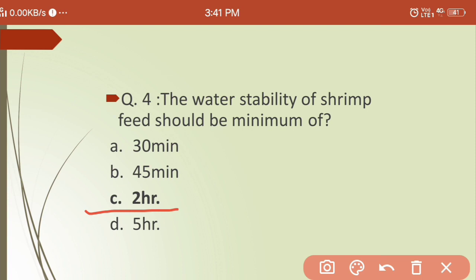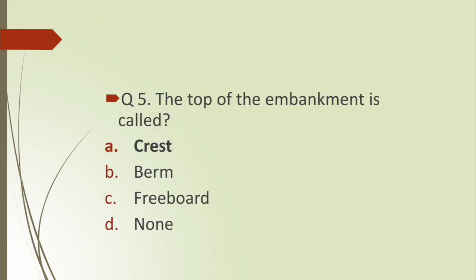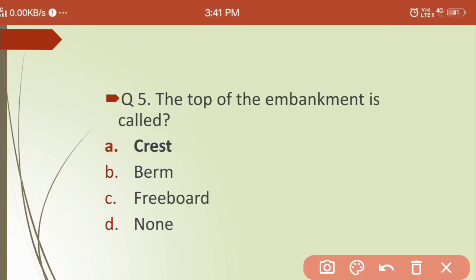Fifth question: the top of the embankment of a pond is called? Options are: (a) crest, (b) berm, (c) freeboard, (d) none. The answer is crest — the top of the embankment is called the crest.